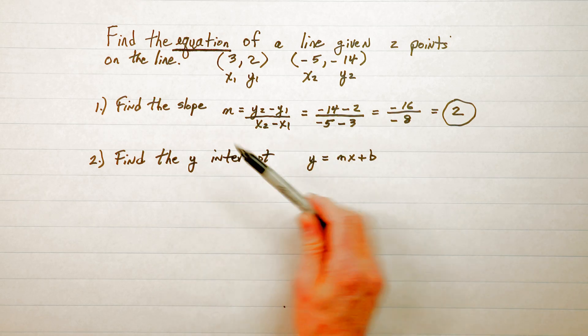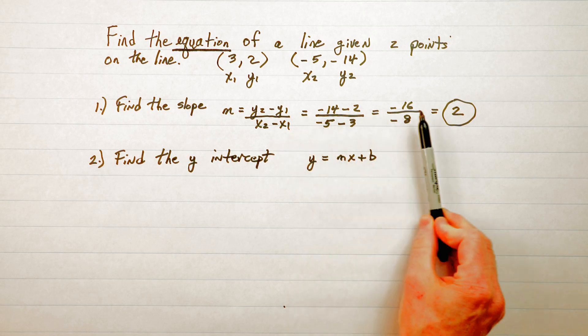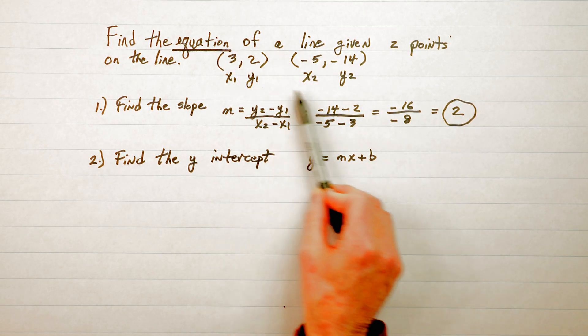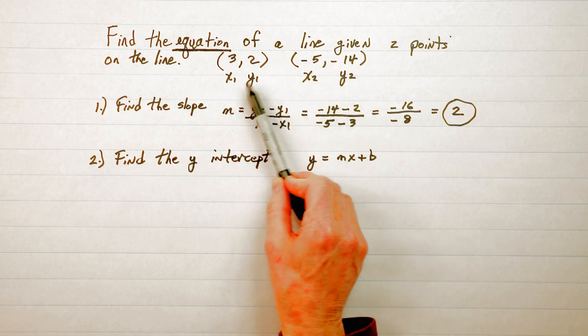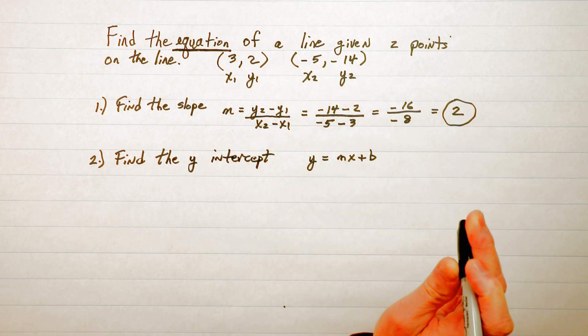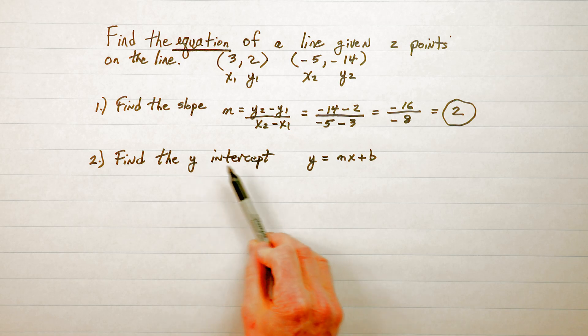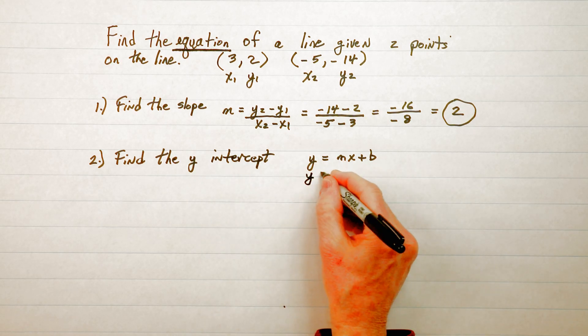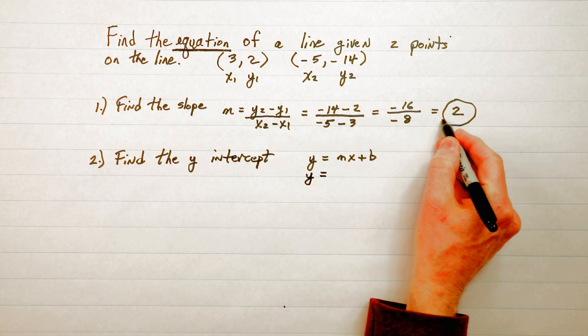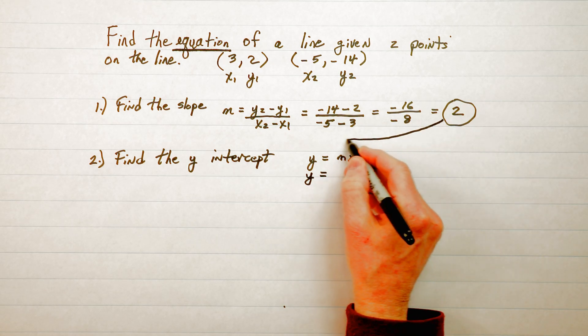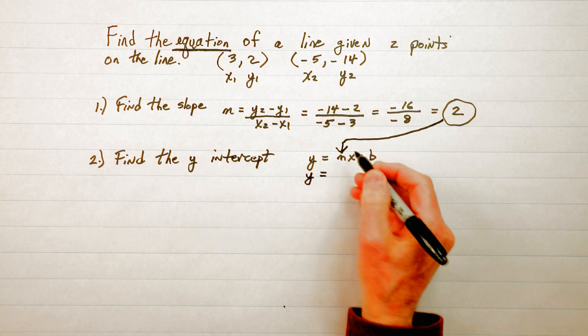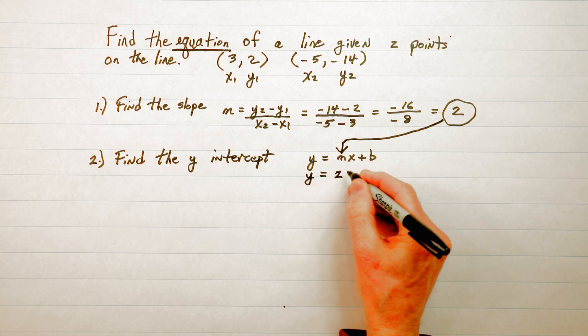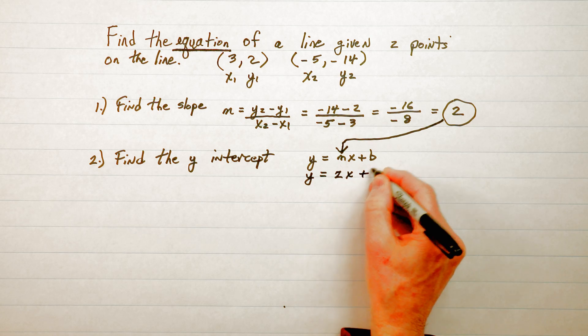So it was easier to find the slope because we were given these points up here x₁, y₁, x₂, y₂, but where do we progress from here? Well the first thing that we're going to do is put 2 in for m which is the slope. So we replace m with 2 and we have 2x plus b.